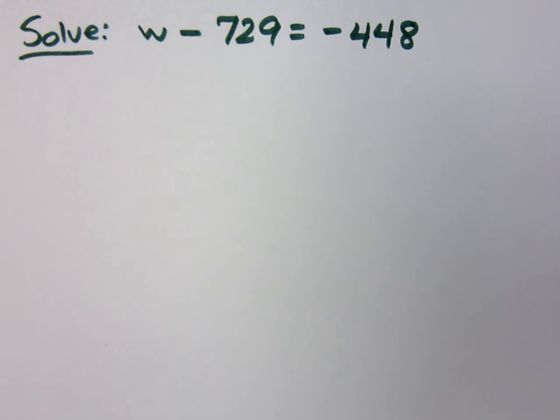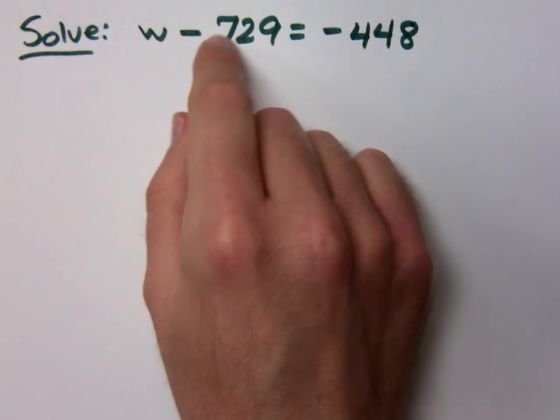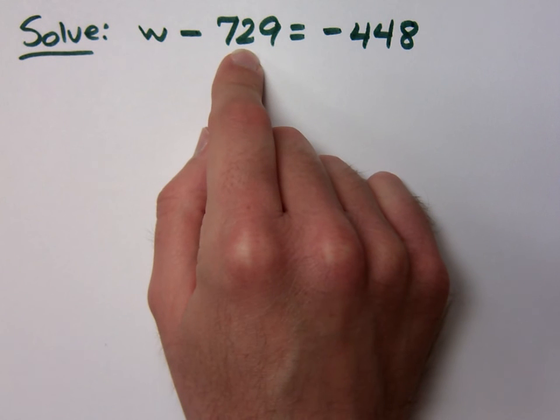All right, let's take a look at another equation here to solve. I've got my variable and I'm subtracting 729. What's the inverse of that?